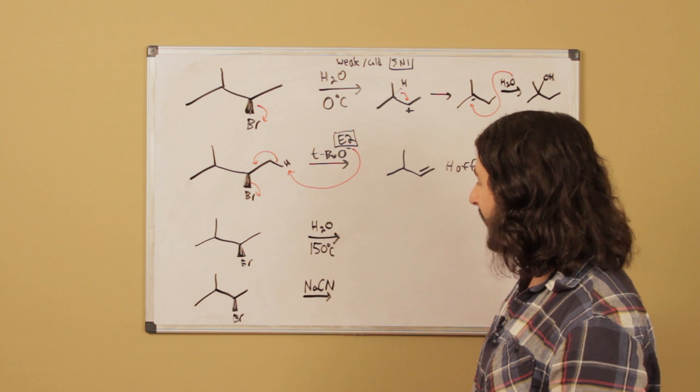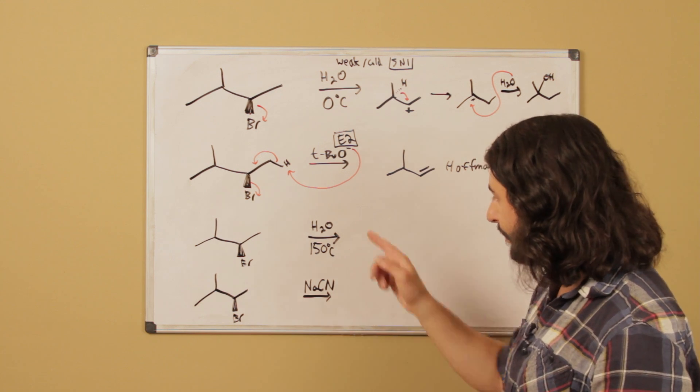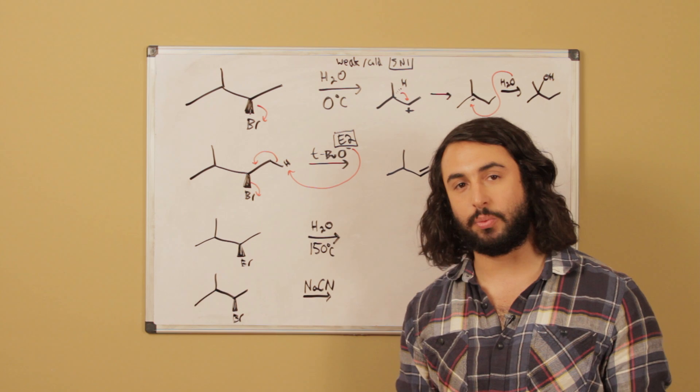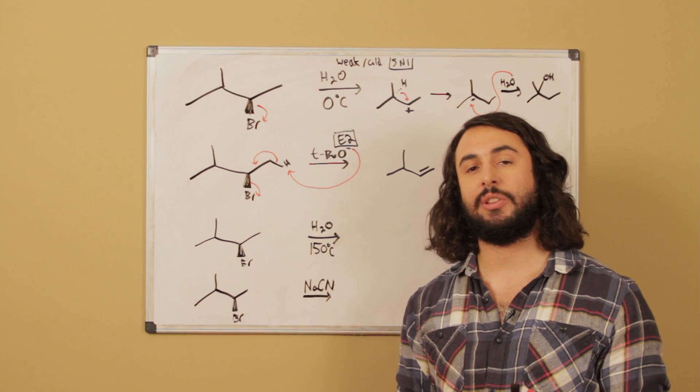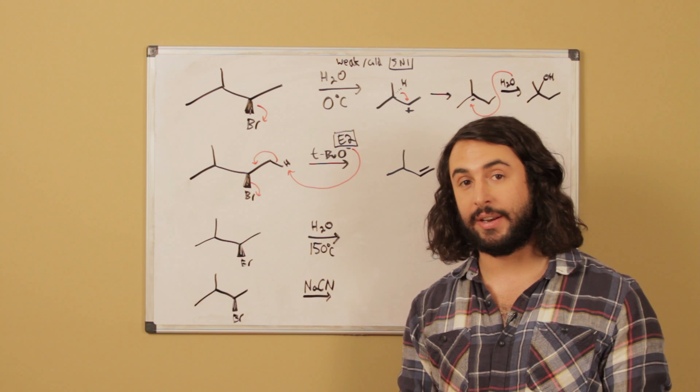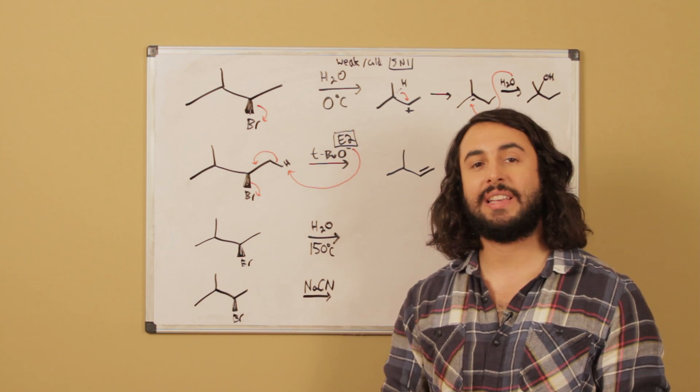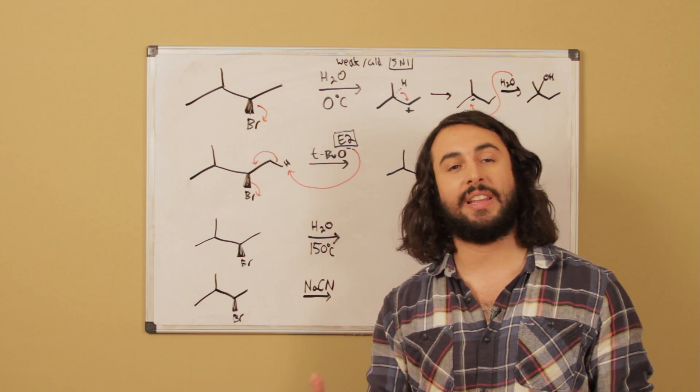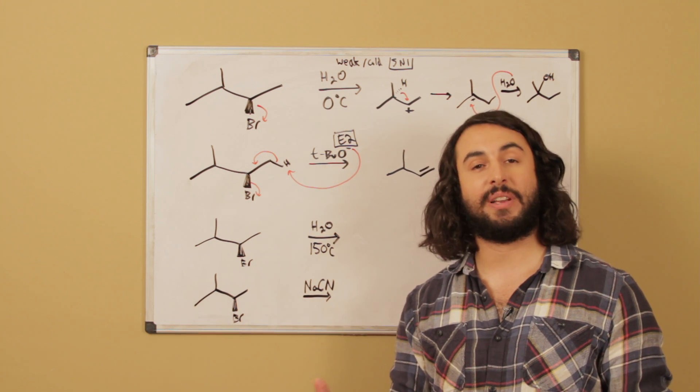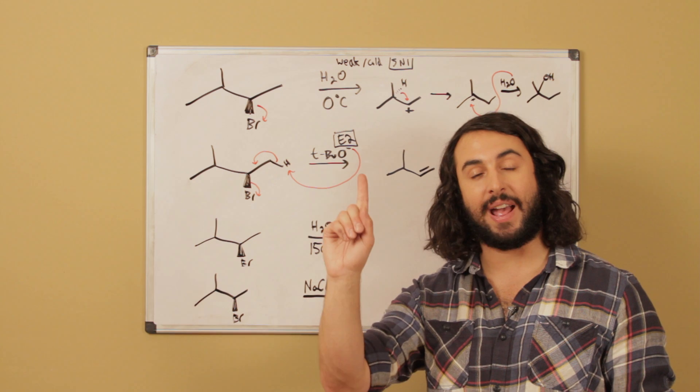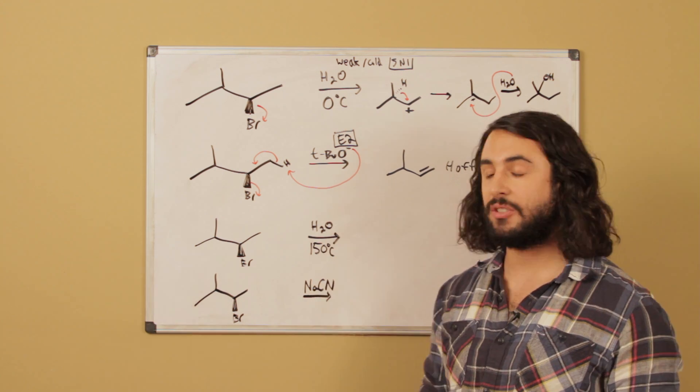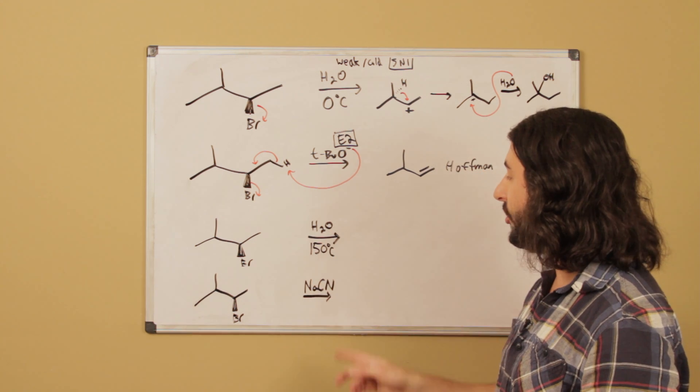Let's look at the third one now. Once again we've got water. Now that's going to be, again that's weak so we're ruling out SN2 and E2, we're going to be looking at SN1 and E1. Now in this case we're looking at a hot temperature. Once again because eliminations are entropically unfavorable, that entropic favorability is going to go up as the temperature increases. And so hot temperatures are going to favor elimination. We think that this one is going to be an E1 reaction.